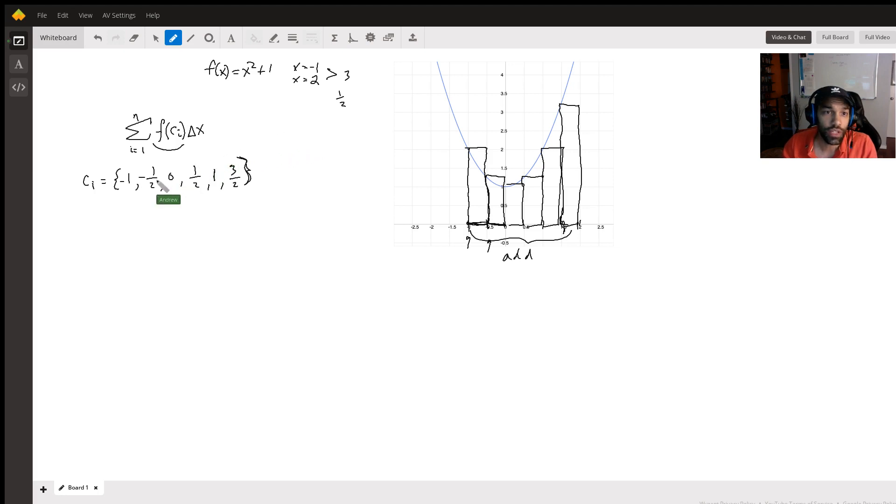So then all we have to do is find what the value of the function is with all of these inputs here. Because what that's going to do is give us these lengths on the left-hand sides of these rectangles. And then when we multiply that by the base here, which our base is given as one half, then we're going to get this times one half. And we add up all those values, that's going to give us our approximation.